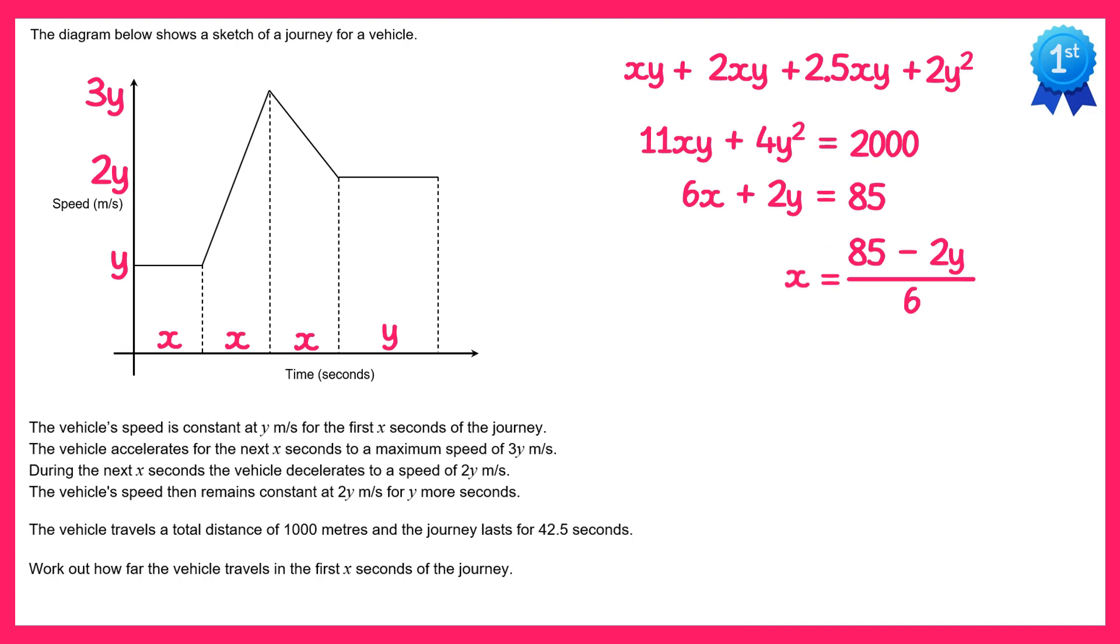Now if we rewrite the first of our equations but replace x with all of this, we get 11 lots of x, which we now know is 85 minus 2y over 6, times y plus 4y squared equals 2000.